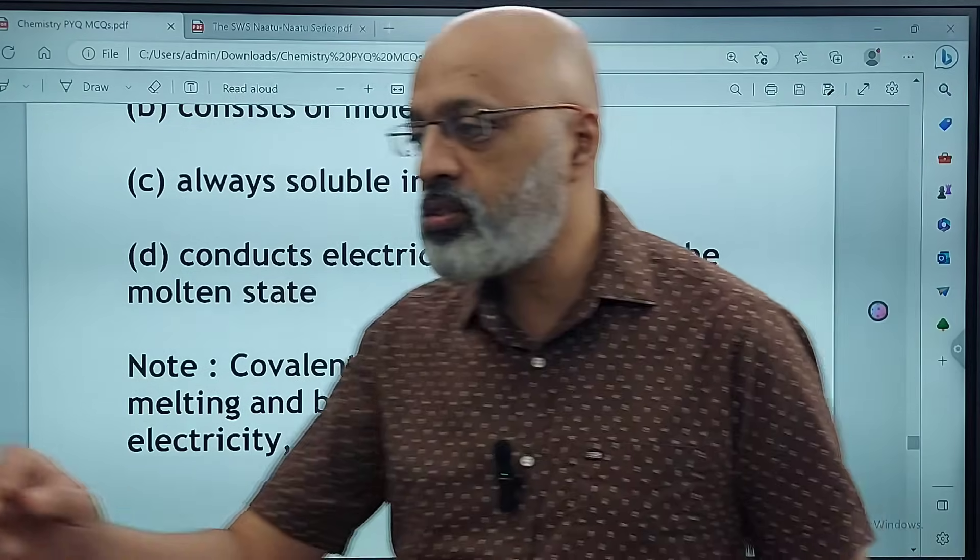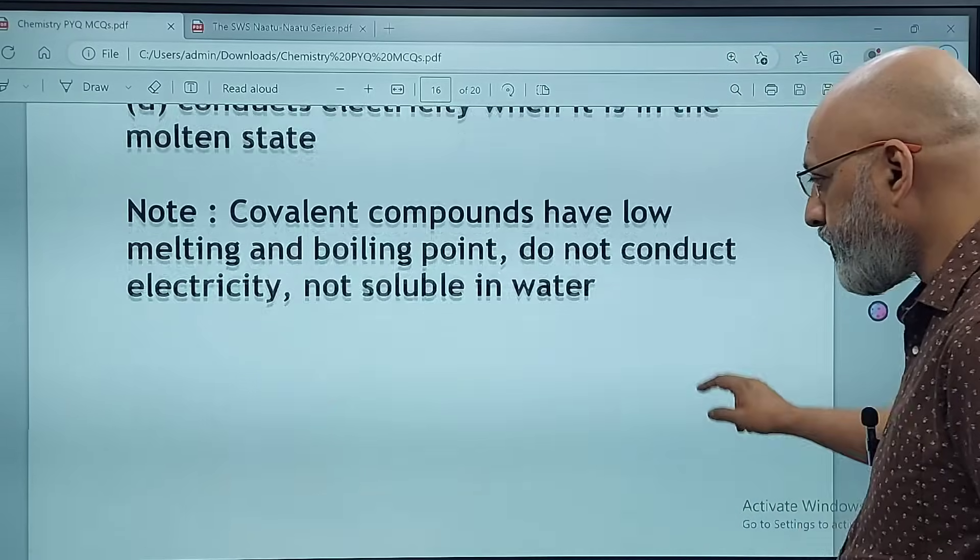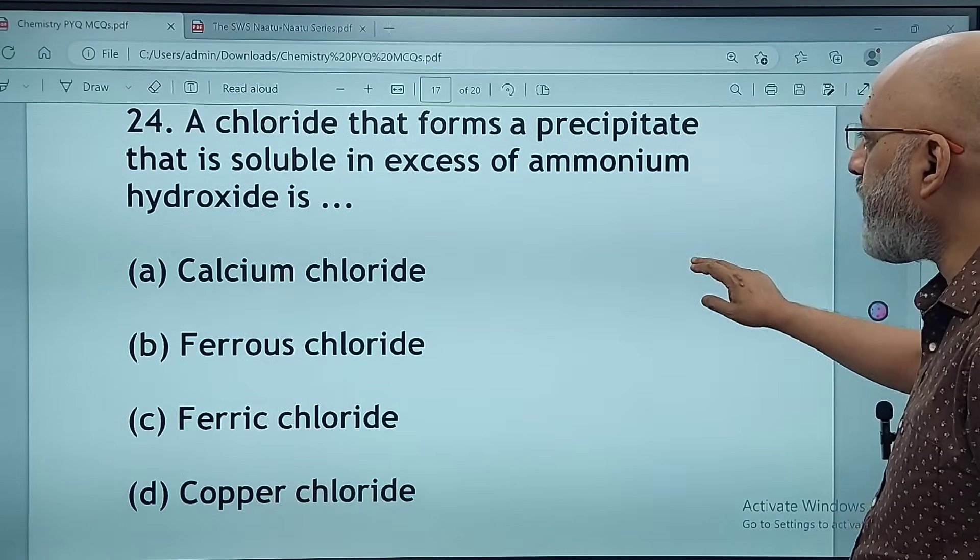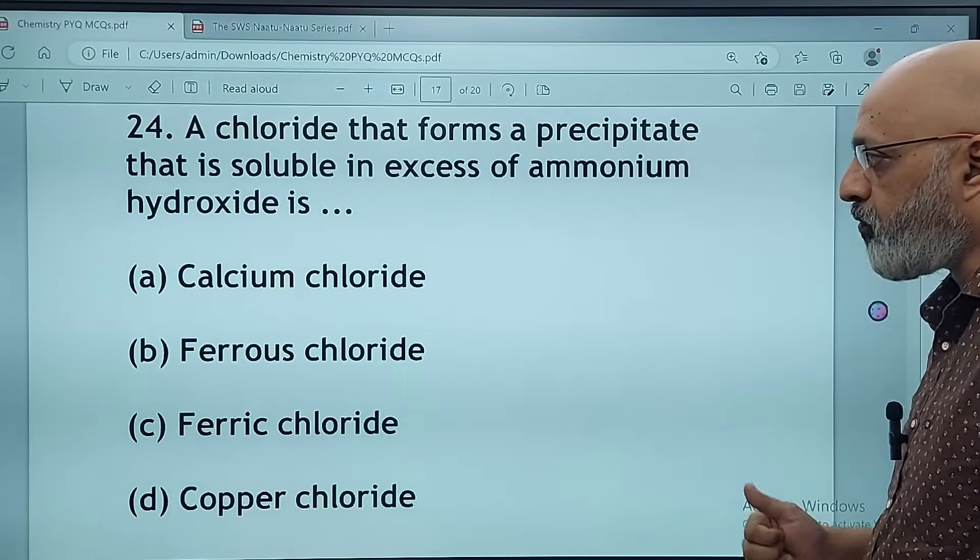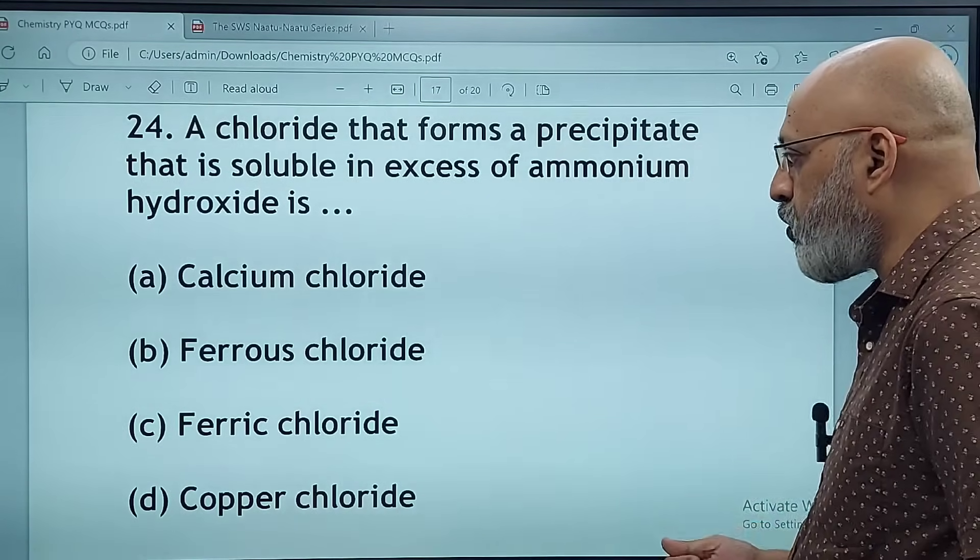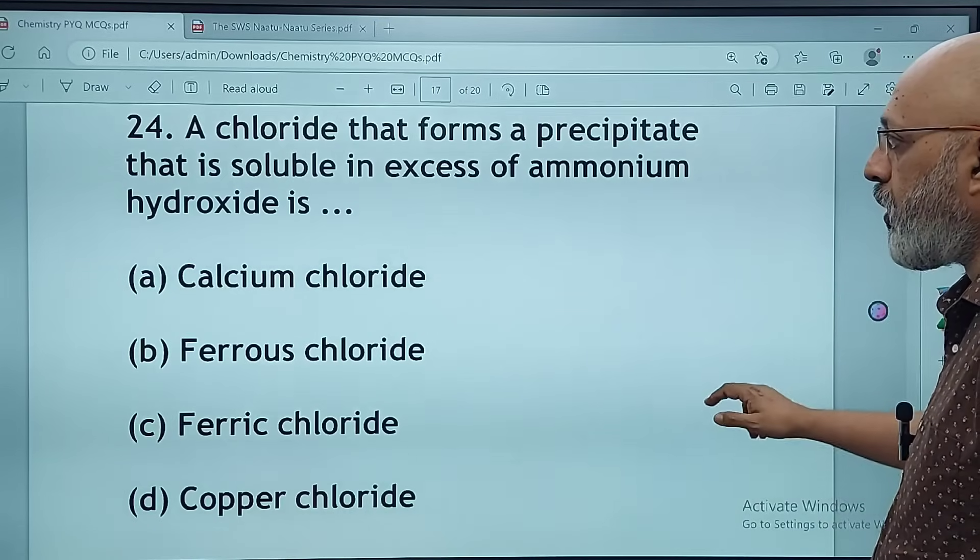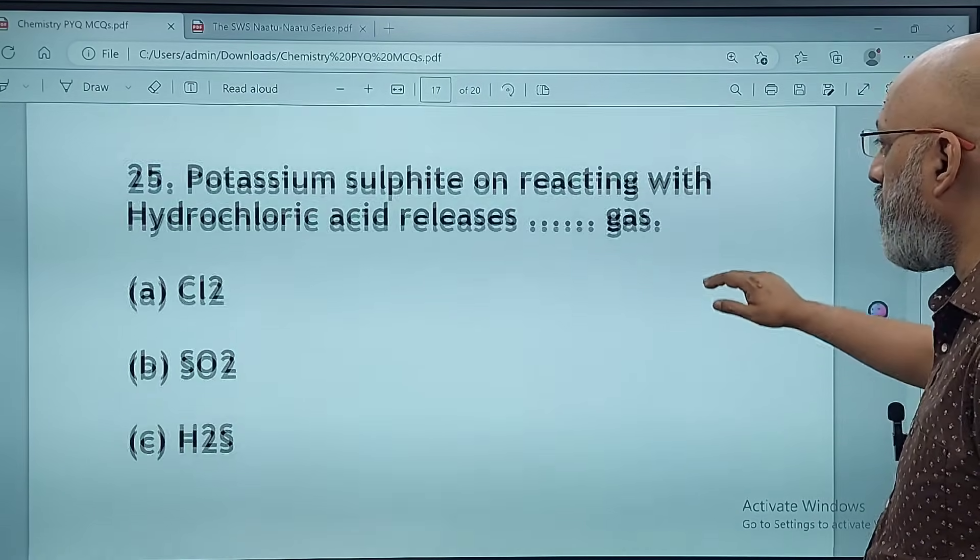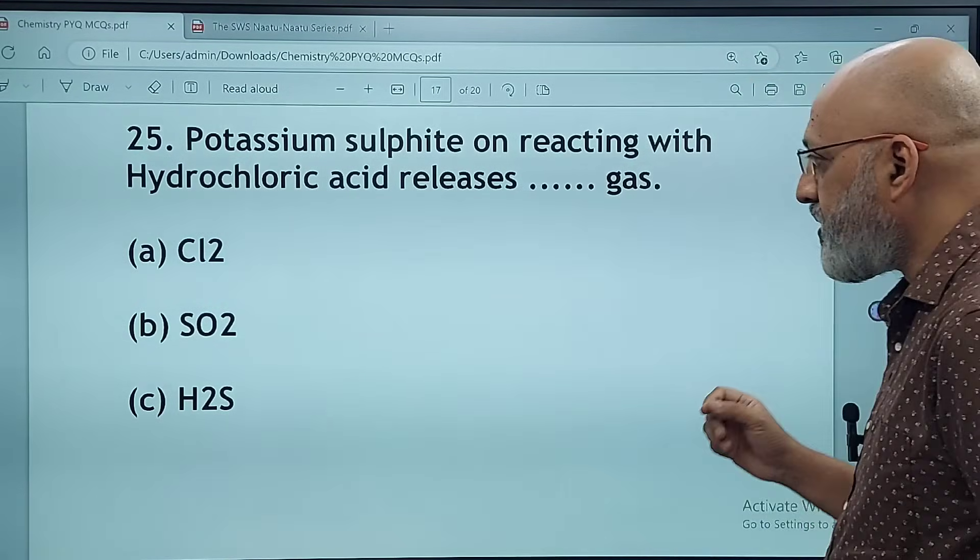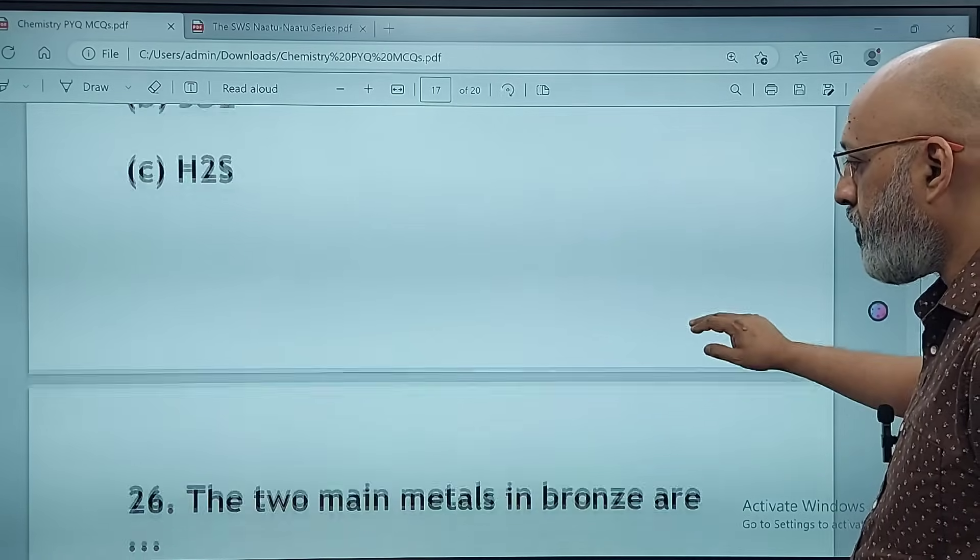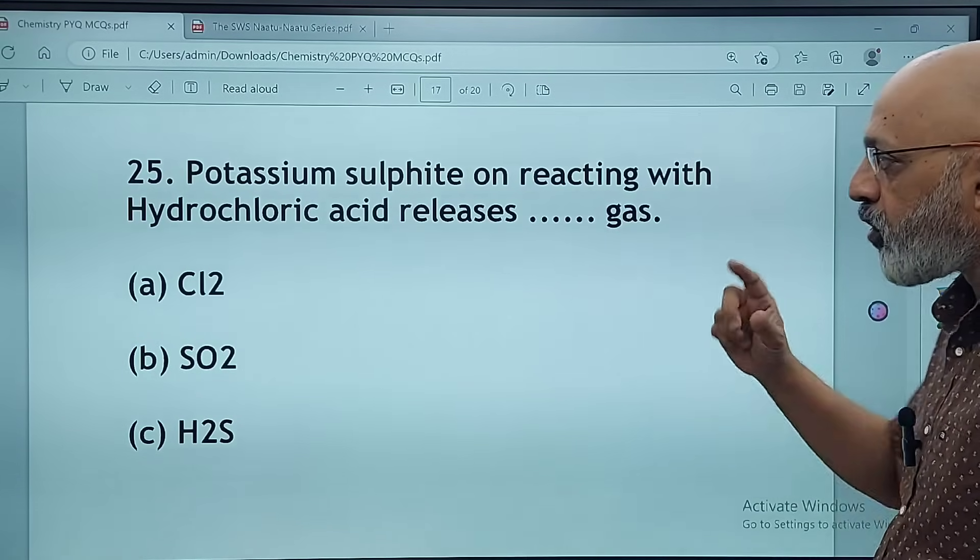A common characteristic of a covalent compound: does it have a high melting point, does it consist of molecules, is it always soluble in water, or does it conduct electricity when in molten state? The correct answer is B, it consists of molecules. Covalent compounds have low melting and boiling points, they do not conduct electricity, and they are not soluble in water.